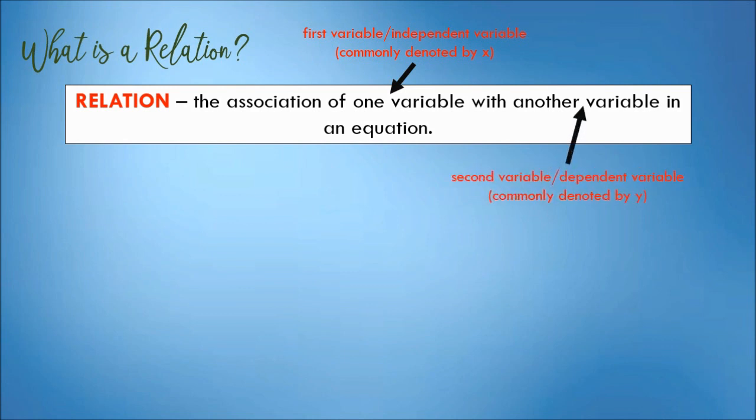While the second variable is the dependent variable. It is commonly denoted by y, but other letters can also be used. For example, we have y is equal to 2x. The first variable x is associated with the second variable y.